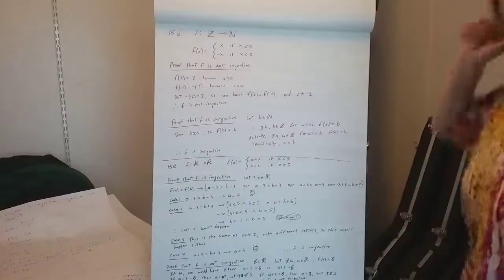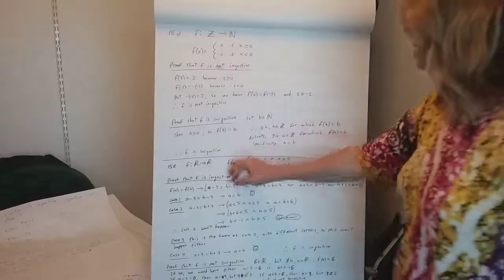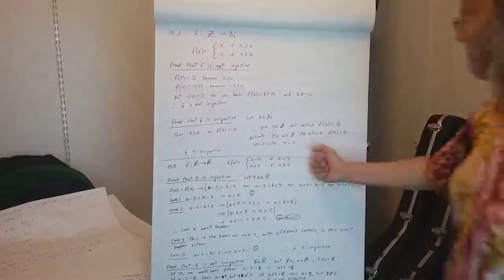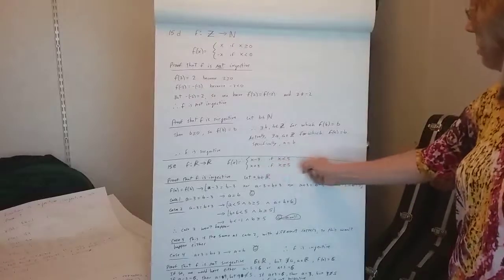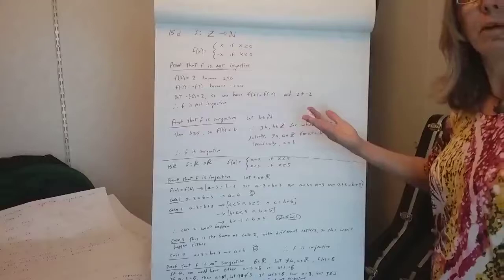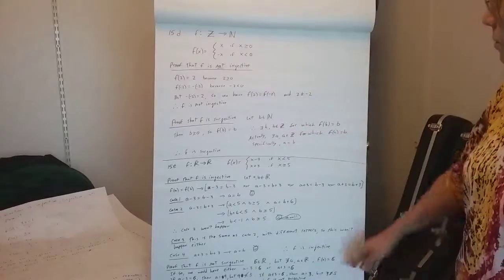Okay, anyway, last one, right. f of x is x minus 3 in the event that your input is less than 5, and x plus 3 in the event that your input is greater than or equal to 5, okay?